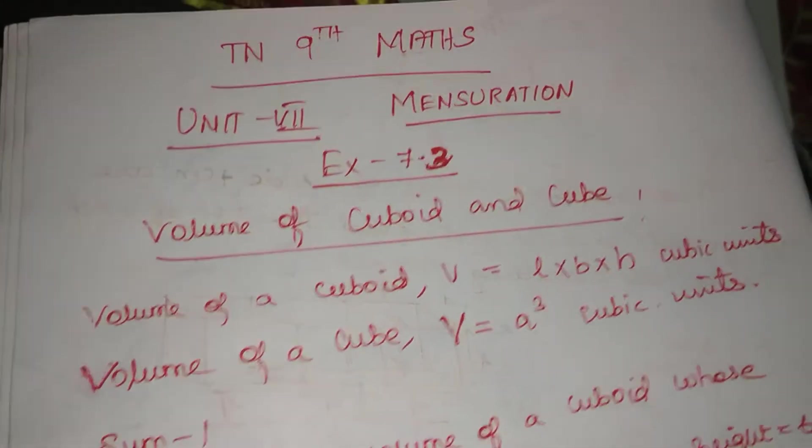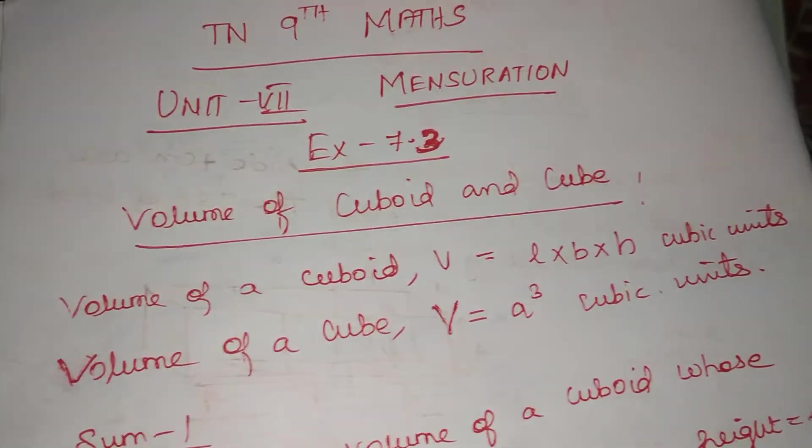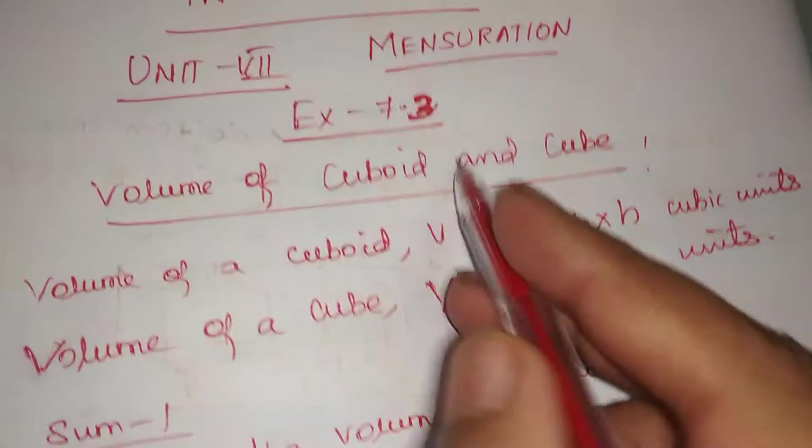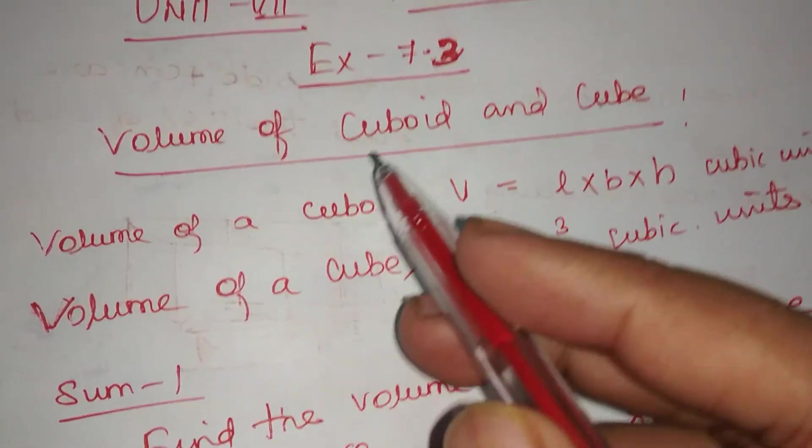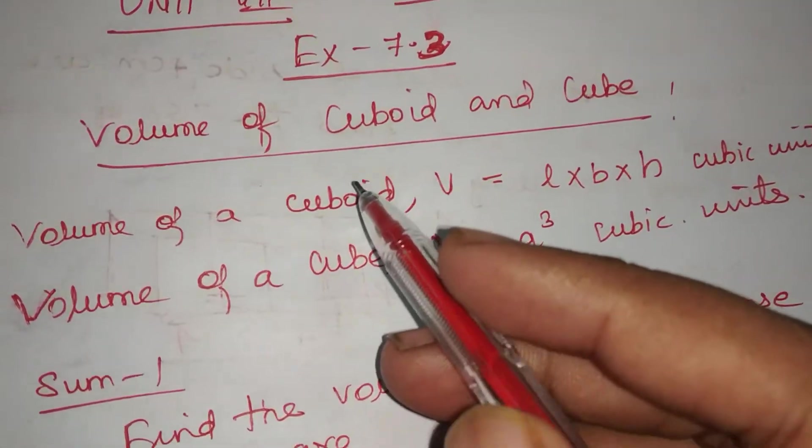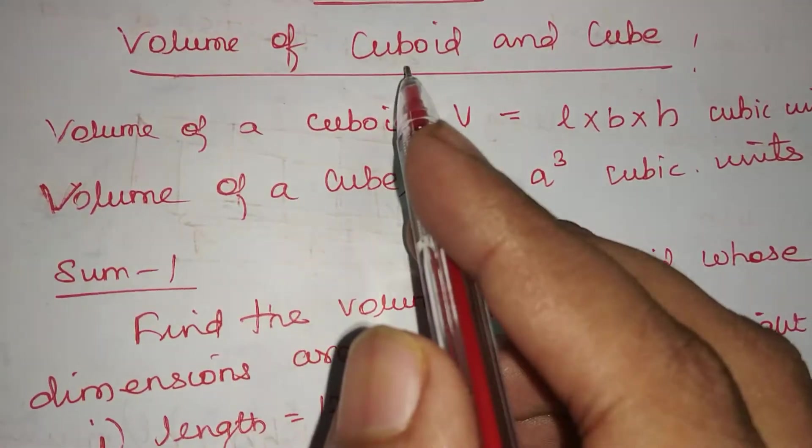Hello viewers, I am Abbas. Today we are going to be doing TN 9th Micro Unit 7 Mensuration, Exercise 7.3. Exercise 7.2 is total surface area and lateral surface area of cube and cuboid. Exercise 7.3 is volume of cuboid and cube.